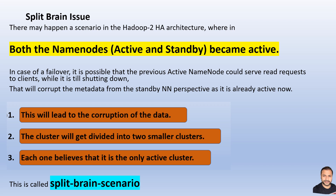The problem this issue brings is that it leads to corruption of the metadata — the namespace information kept to handle the underlying data nodes, the information regarding blocks, allocation of tasks, and storage of files. Another issue is that the whole cluster gets divided into two smaller clusters, each led by individual name nodes. Some data nodes associate with one name node and others with name node 2, and both groups believe they are the only active cluster, behaving in a split manner with the entire resource set divided into two.